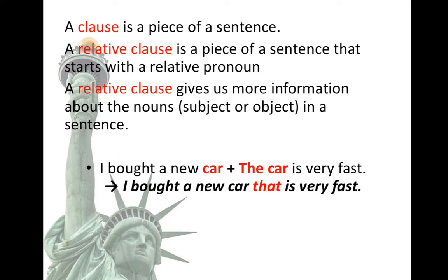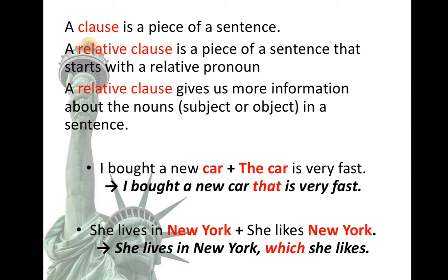When I connect those two first clauses, I get a sentence that has a relative pronoun and a relative clause. The second example: 'She lives in New York' and 'She likes New York.' These two clauses have something in common — New York. So I'm going to use a relative pronoun to replace one of the 'New Yorks' and connect the two sentences. The result is: 'She lives in New York, which she likes.'